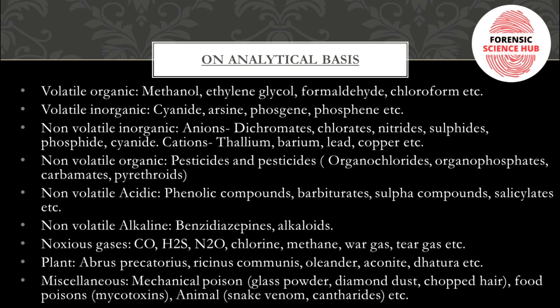On an analytical basis, poisons are divided into various classes. First is volatile organic poison, which includes methanol, ethylene glycol, formaldehyde, and chloroform — all volatile and organic in nature. Then volatile inorganic ones include cyanide, arsine, phosgene, and phosphine. Non-volatile inorganic ones include anions such as dichromate, chlorates, nitrite, sulfide, phosphide, and cyanide, and cations such as thallium, barium, lead, and copper.